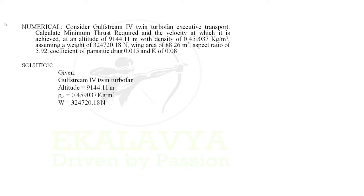The weight of the aircraft is denoted as W; here W equals 324720.18 Newton. Wing area is denoted as S; here S equals 88.26 meter square. Aspect ratio is denoted as AR; here AR equals 5.92. Coefficient of parasitic drag is denoted as CD0; here CD0 equals 0.015. k equals 0.08 is also given.